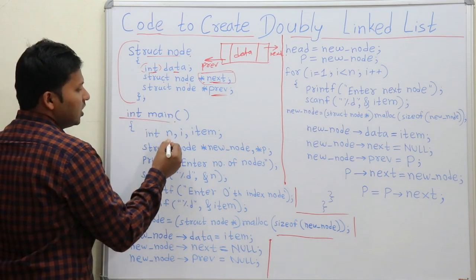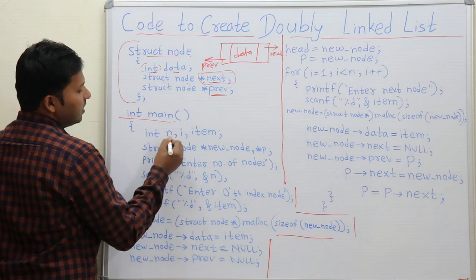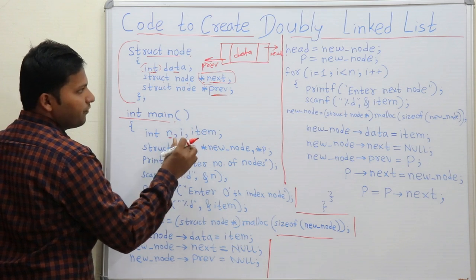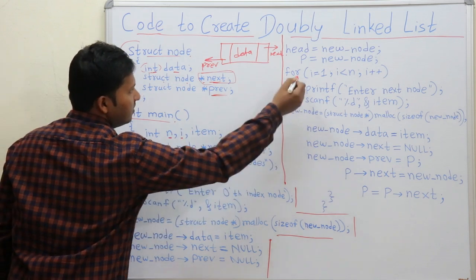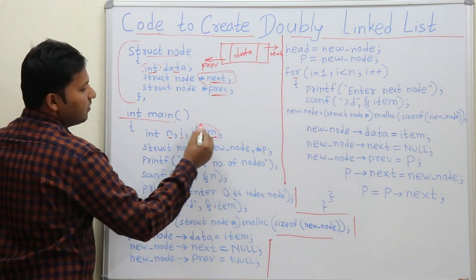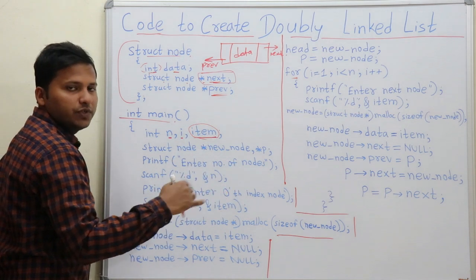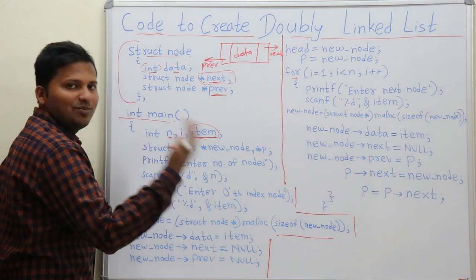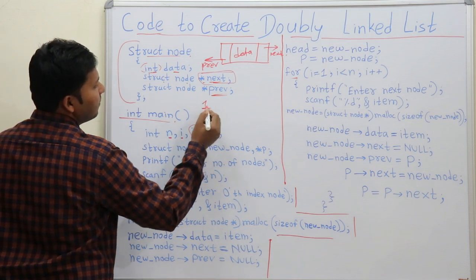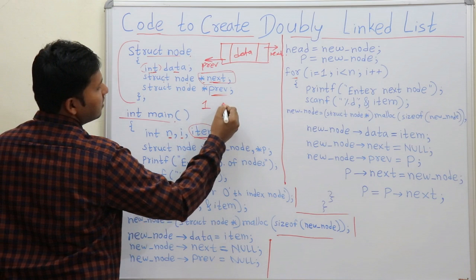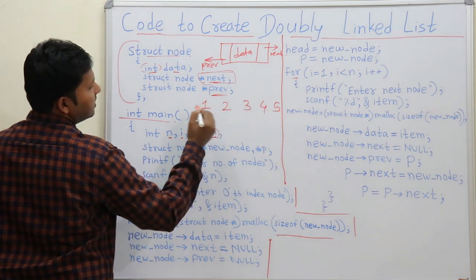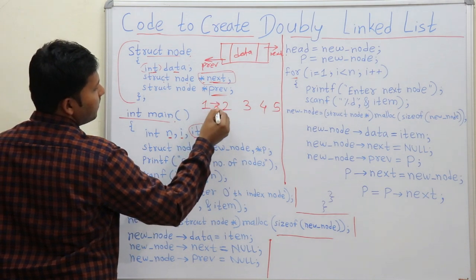Inside the program we declare some variables. N is the number of nodes. I is a variable used for the for loop, and item takes the value of the element which we want to insert in the doubly linked list. Suppose we want to make a doubly linked list with values 1, 2, 3, 4, and 5.